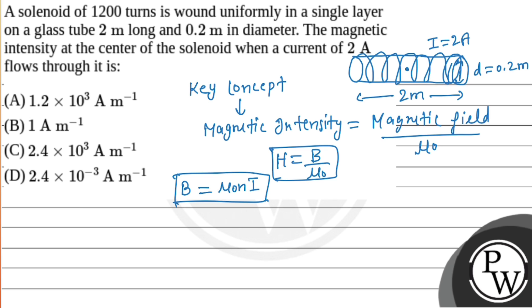We will put this into the formula: H equals μ₀ n I over μ₀, so μ₀ cancels out. H equals n I.